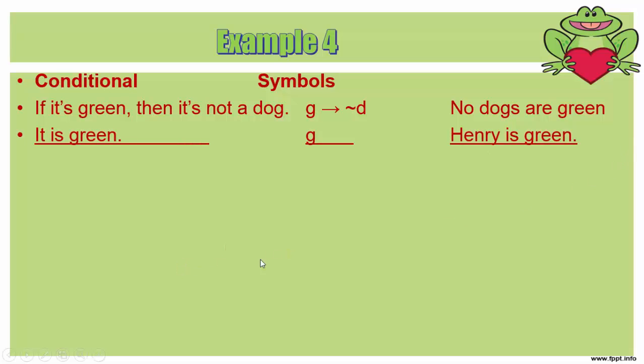Then we can say it is green. That's the conditional and the symbol green, and then we say Henry is green. Therefore, it is not a dog. Therefore, Henry is not a dog.